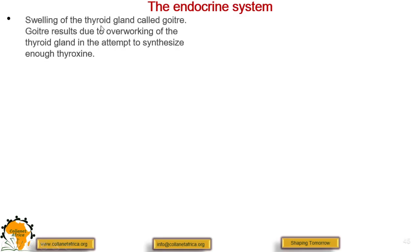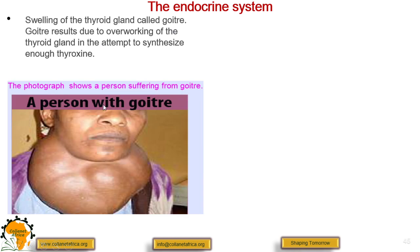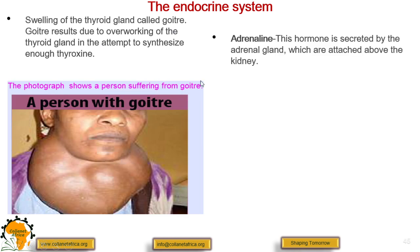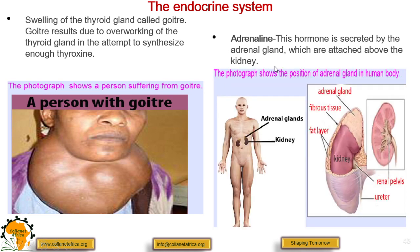The swelling of the thyroid gland is called goiter, and it results from overworking of the thyroid gland in its attempt to manufacture enough thyroxine. This is a person with a goiter. Apart from thyroxine, we also have adrenaline, which is secreted by the adrenal gland attached above the kidney.